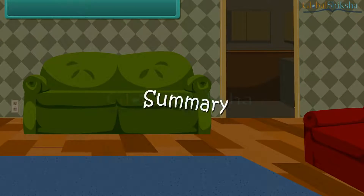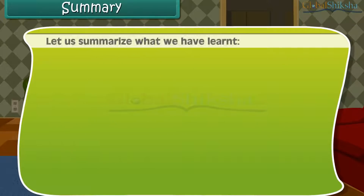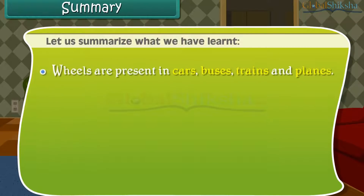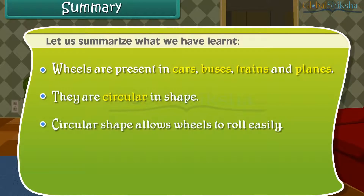Summary. Let us summarize what we have learned. Wheels are present in cars, buses, trains and planes. They are circular in shape. Circular shape allows wheels to roll easily.